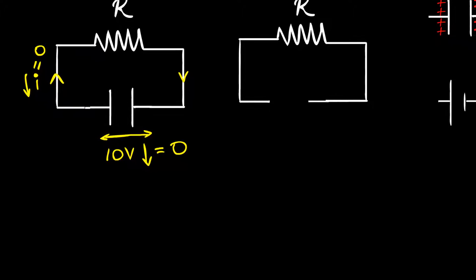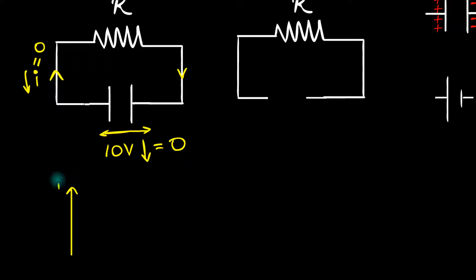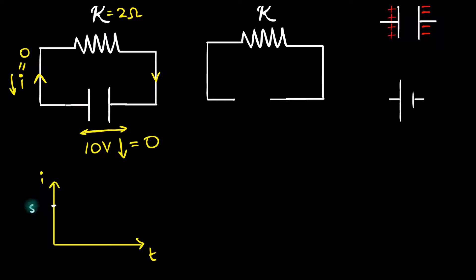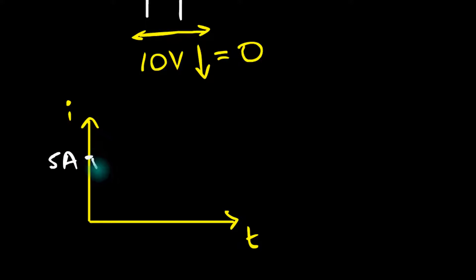So we can make a plot of current versus time. Let's say at time t equals zero, there was a switch and we just closed it. Initially the voltage was very high — in our example, 10 volts — and let's say the resistance was 2 ohms. So applying Ohm's law, initially the current must have been 10 divided by 2, which is 5 amperes. That was the initial value. But then as time passes by, the current starts dropping. We'll discuss later how the current drops exponentially, but eventually, if you wait long enough, the current dies out and becomes zero.